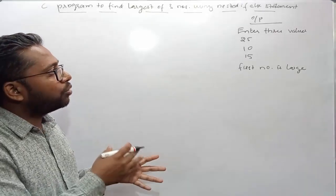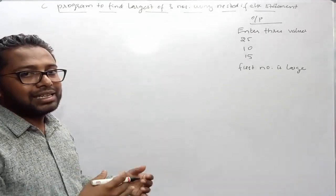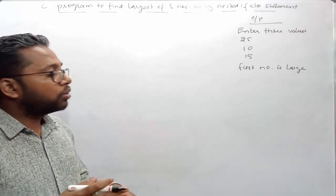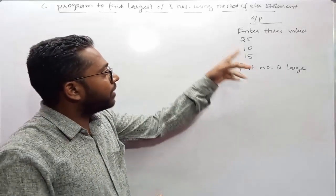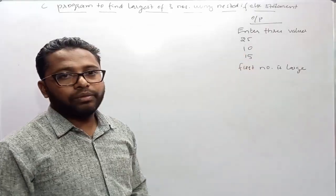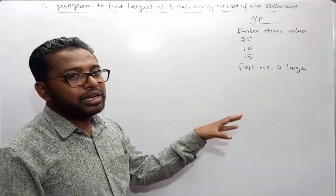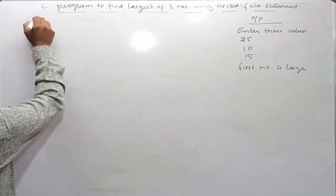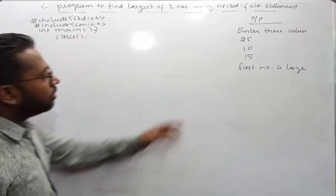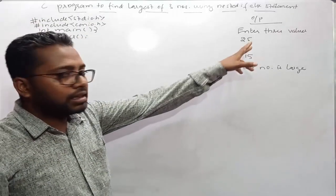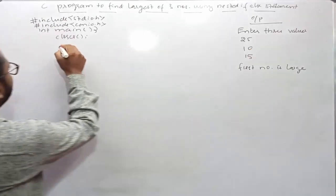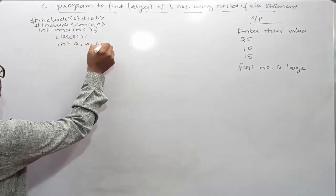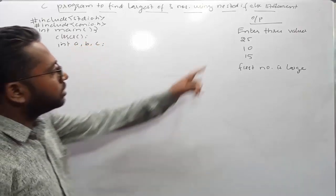Just looking at the output, I can quickly say that I need to create three variables in my program which will hold these three values — 25, 10, and 15 — and all three variables will be of type integer. Now let me first include the header files.